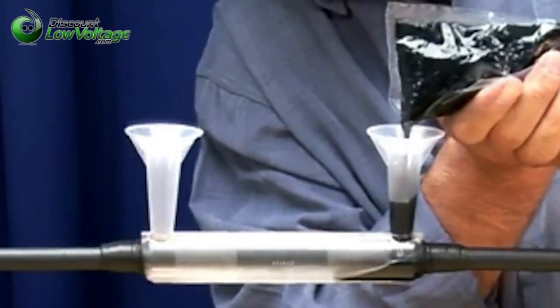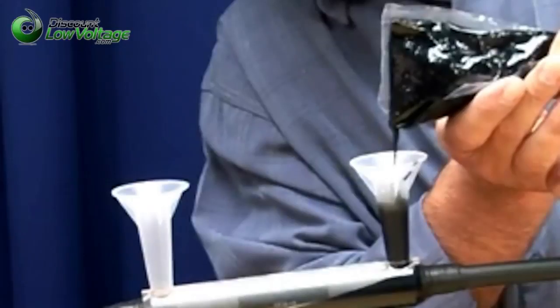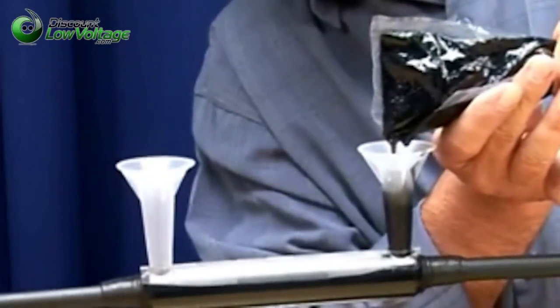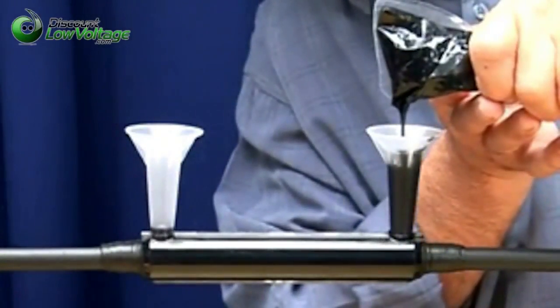When the resin has solidified and cooled, the splice may be put into service. A helpful hint: tilt the splice slightly and pour resin in the downhill side spout if area permits. This will push the resin to the raised end spout pushing excess air from the splice.